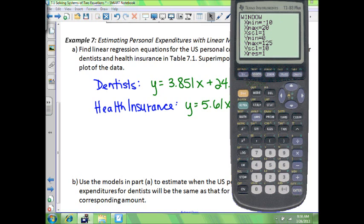Now a good window here. If we go negative 10 to 20, that's fine. The year is 0 to 13 really, so negative 10 to 20 is fine. X scale of 1. 0 is fine for the Y. And Y max will make it about 125 because the health insurance in billions of dollars is 106.